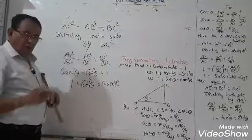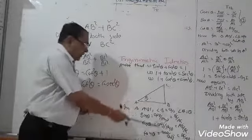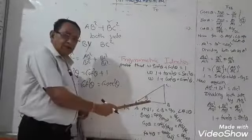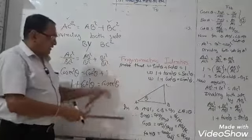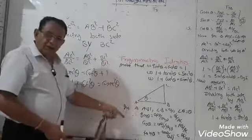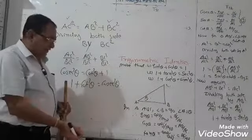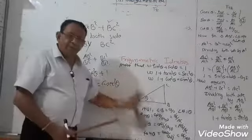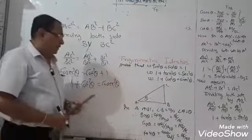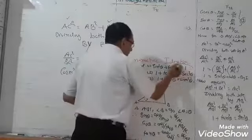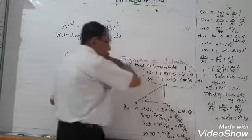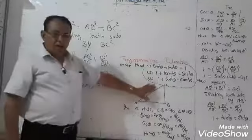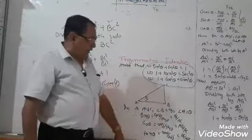For homework, you have to derive these three identities. First, write them down. Second, try yourself — you will make some mistakes, then correct them. Third time, write it again and learn by heart. These identities are very useful for the exam and everywhere.